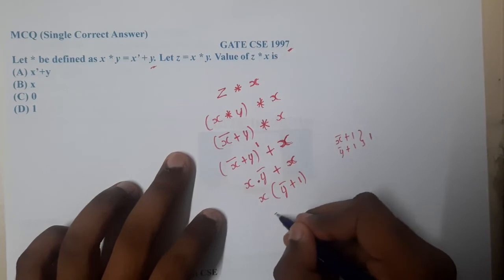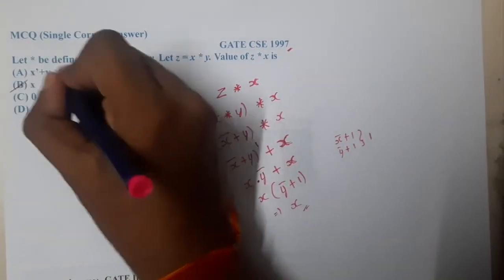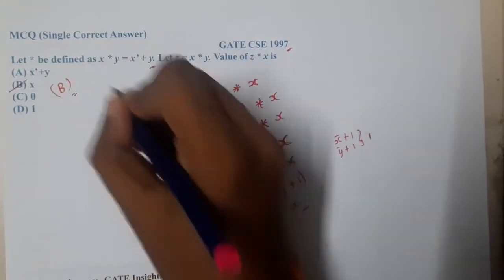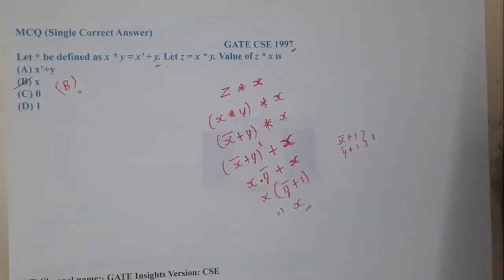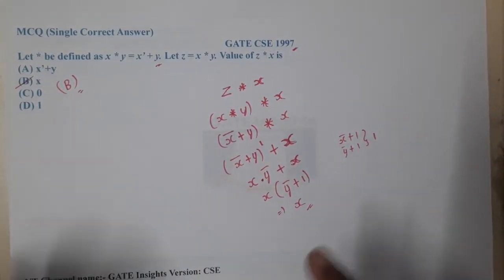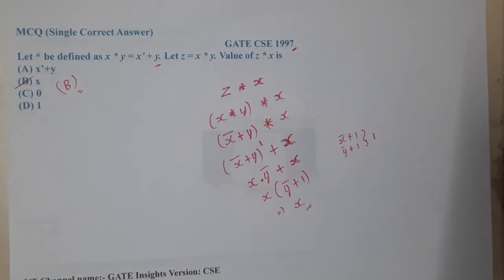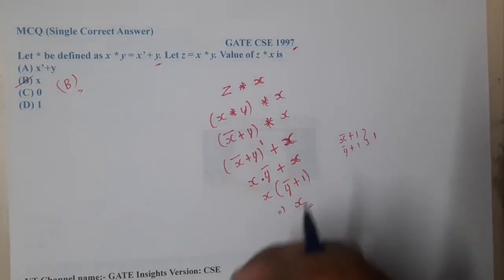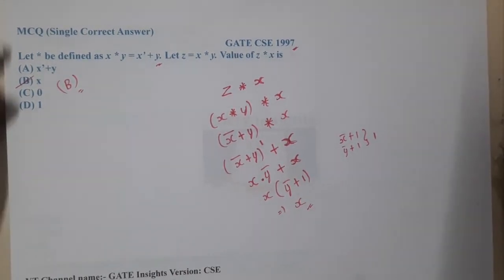At the whole conclusion, you can say B is the correct answer. The only thing is you should be clear with how to solve these types of questions. We substituted and tried to reduce it as much as possible as per our options.